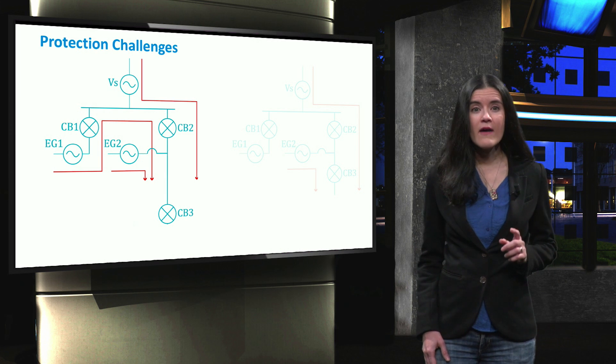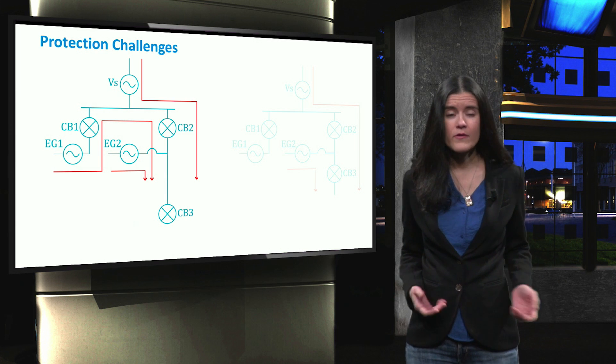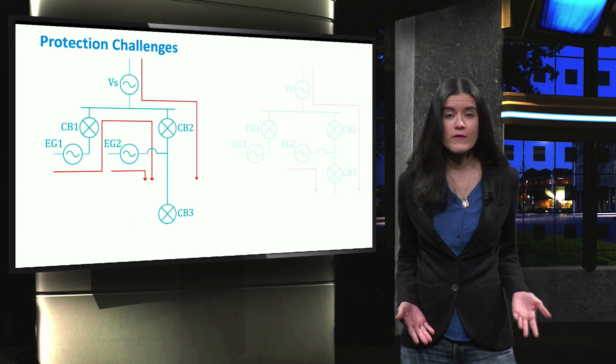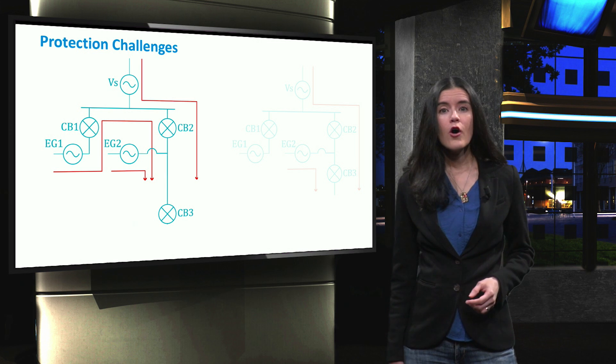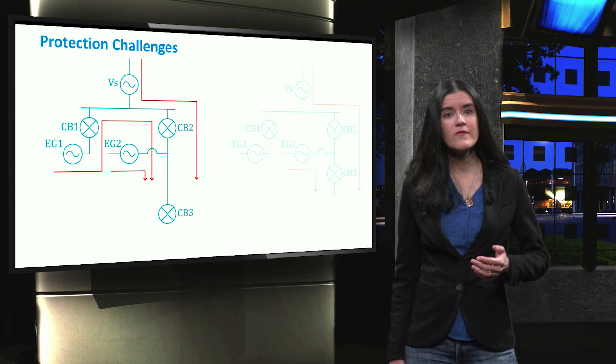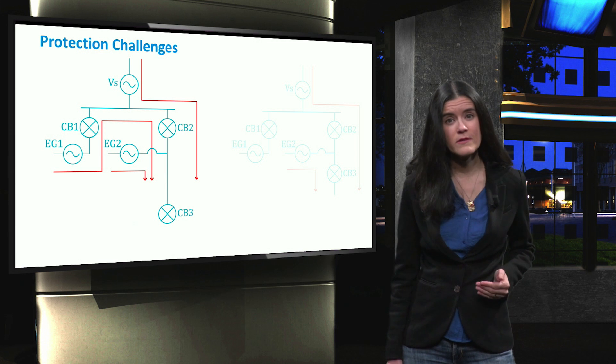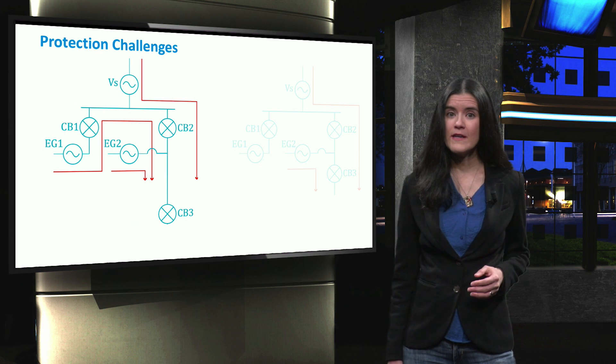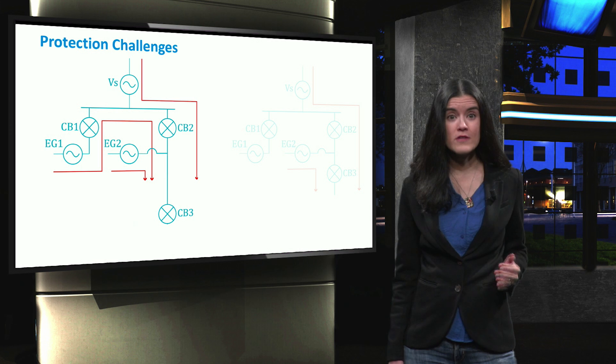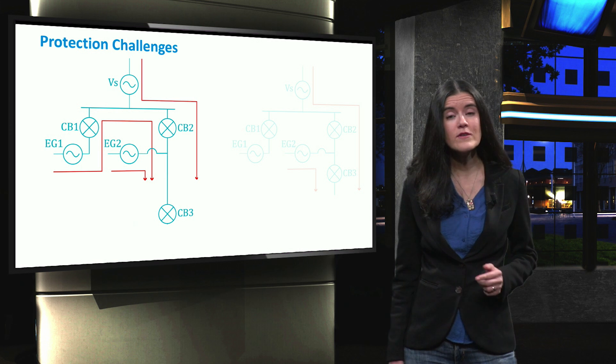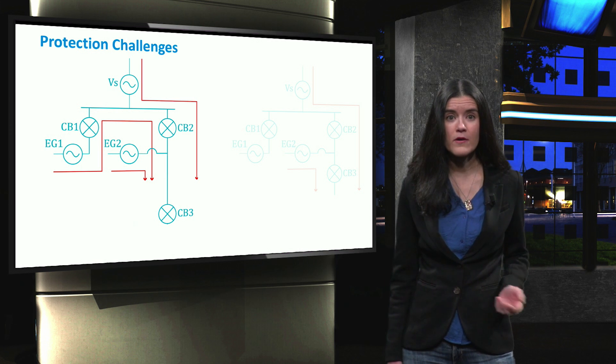As we have seen before, having distributed generators in a microgrid results in having bidirectional current flows. In the past, overcurrent protection was implemented for unidirectional flows exclusively. The lack of coordination among the overcurrent relays and circuit breakers can result in faulty or mal-operation in microgrids.